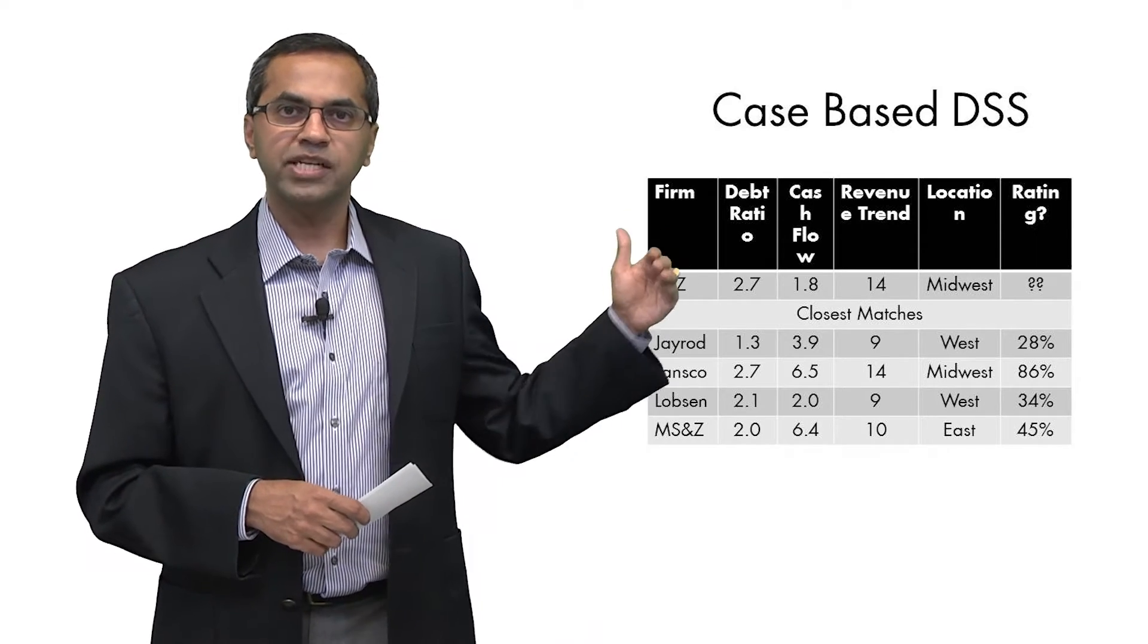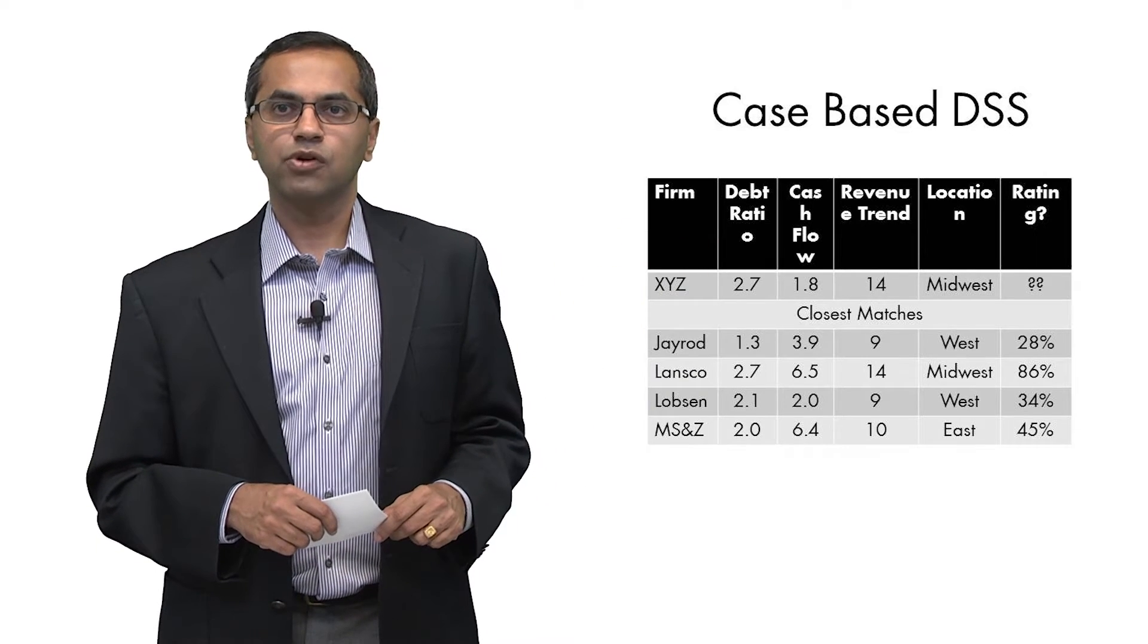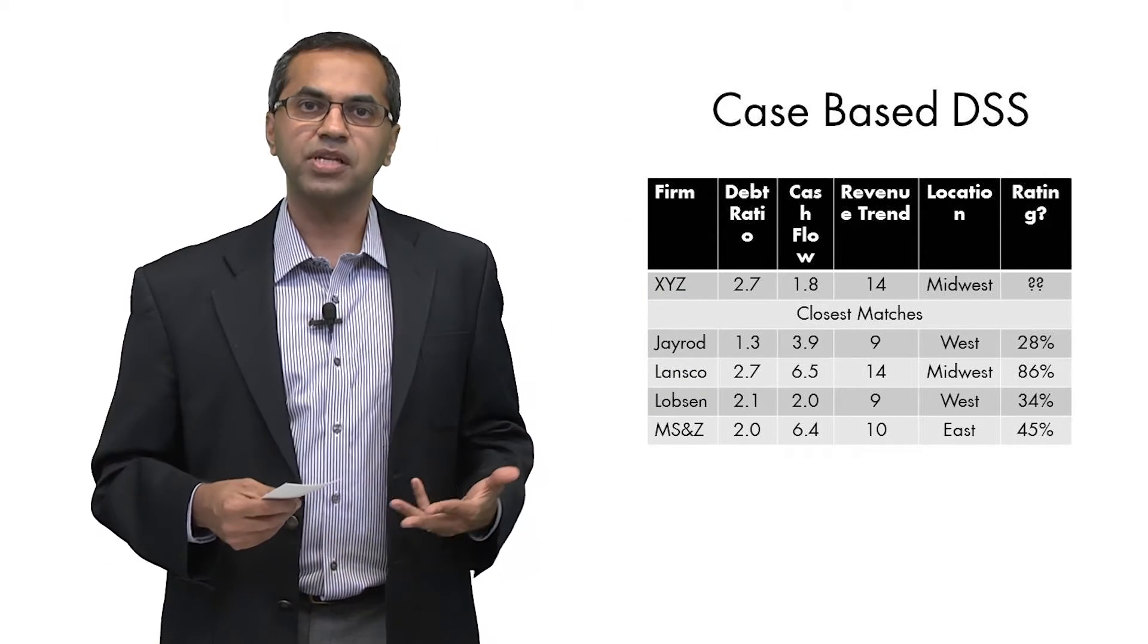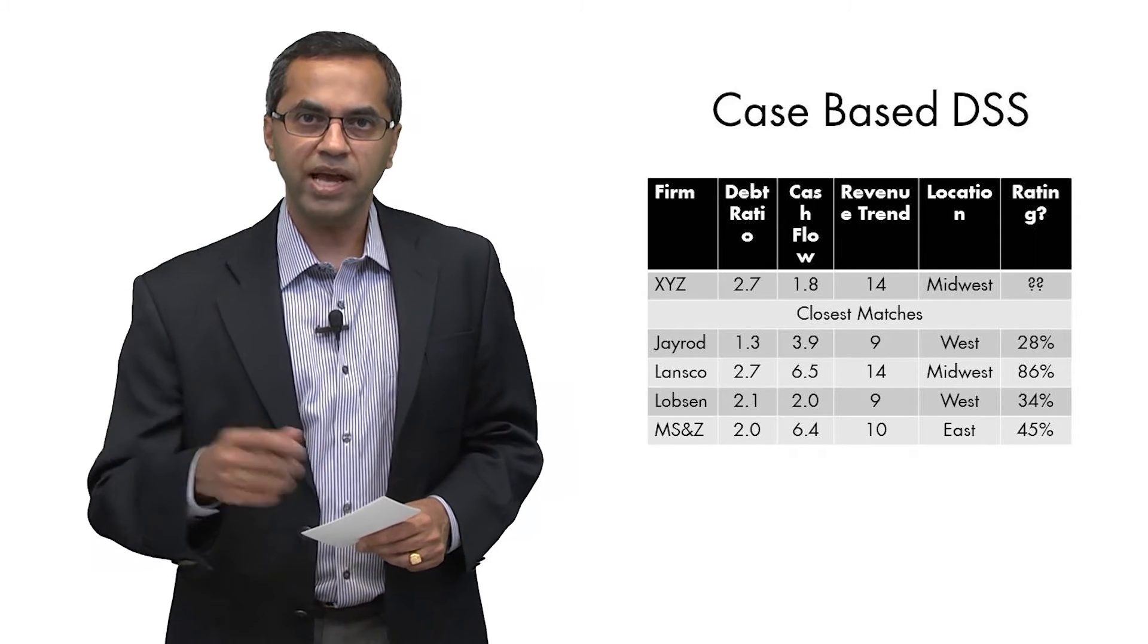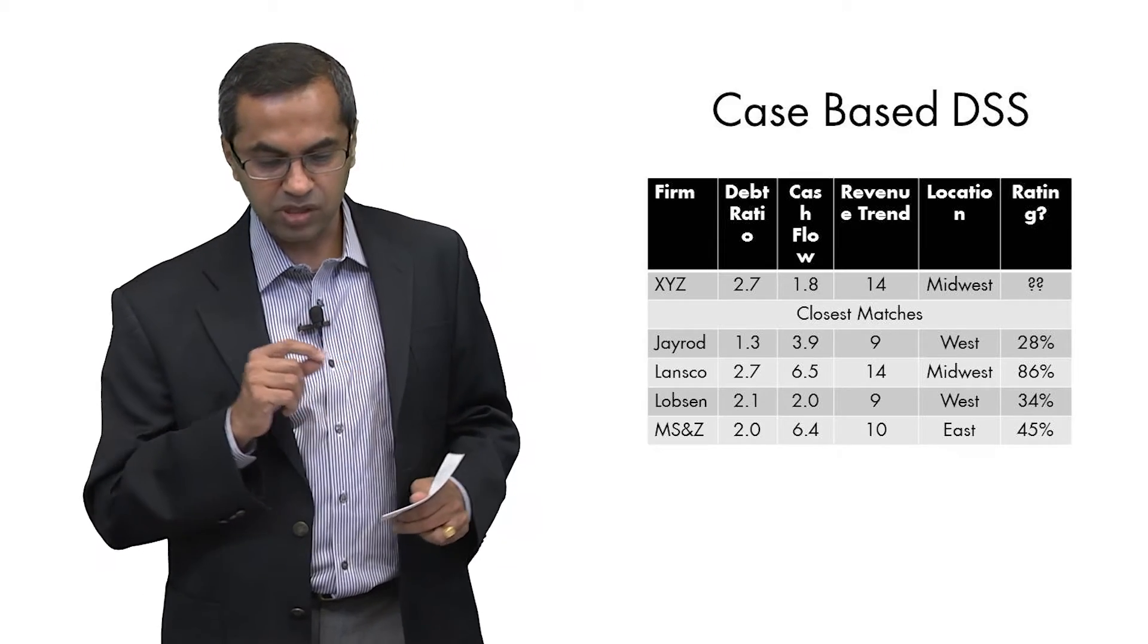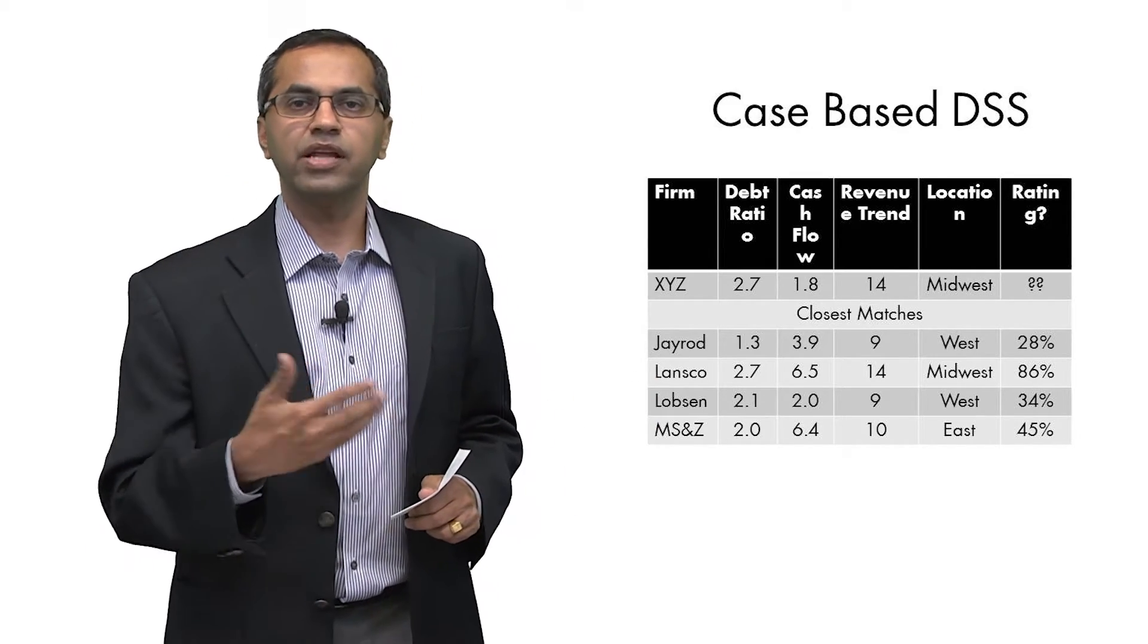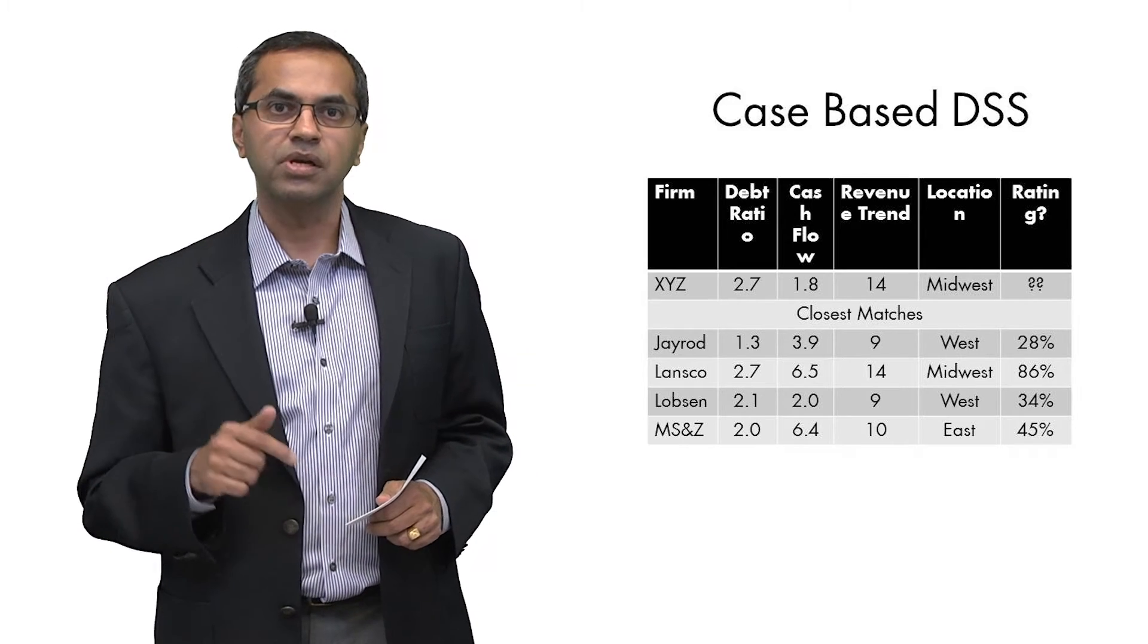You now have data on each of those four and you also know what the credit rating is for those four because you've actually had an experience dealing with those four companies. What you can do next is to say, well gee, do I think that XYZ is most like one of these four? See what happened to those and then make a judgment about what you think is going to happen to this one.